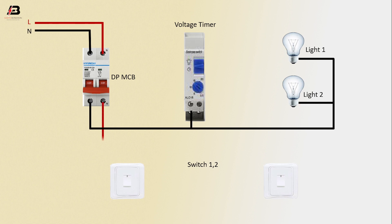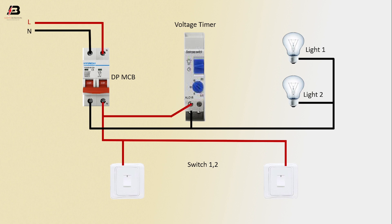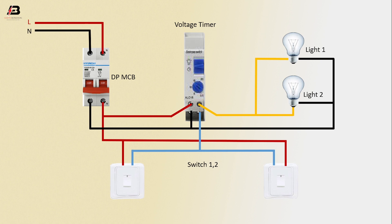Phase connection from DPMCB to connect switch 1 and switch 2. Phase connection input to voltage timer. Output connection from voltage timer to connect light 2. Output connection to connect light 1. Output connection from voltage timer to connect switch 1 and switch 2.